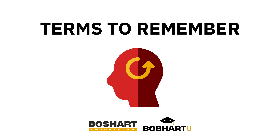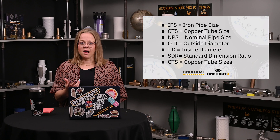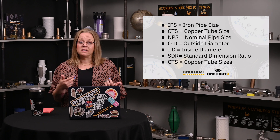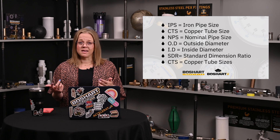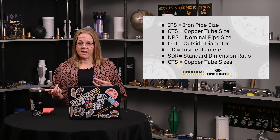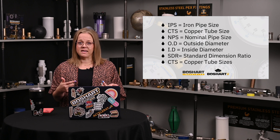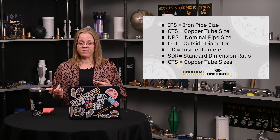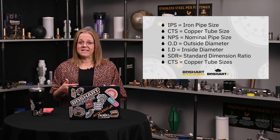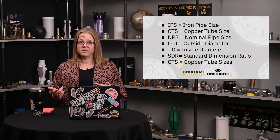Terms to remember: IPS — iron pipe size; CTS — copper tube size; NPS — nominal pipe size; OD — outside diameter; ID — inside diameter; SDR — standard dimension ratio; CTS — copper tube sizes.